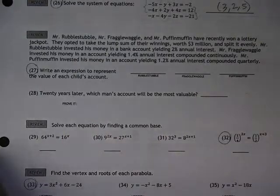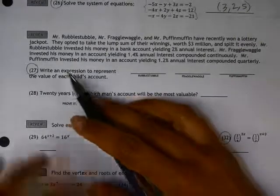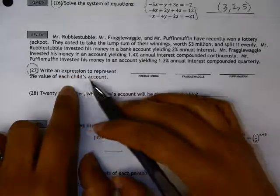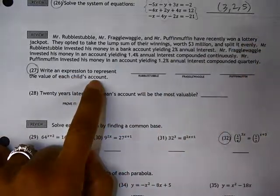This is worksheet 25.1, and we're going to look at problem 27, which is to write an expression to represent the value of each child's account in this problem.